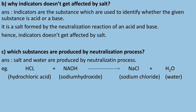Question five (b): why are indicators not affected by salt? Indicators are substances used to identify whether a given substance is acid or base. Salt is formed by the neutralization reaction of an acid and a base, so indicators are not affected by salt. Question five (c): which substances are produced by the neutralization process? Salt and water are produced. Example: hydrochloric acid plus sodium hydroxide gives sodium chloride plus water.